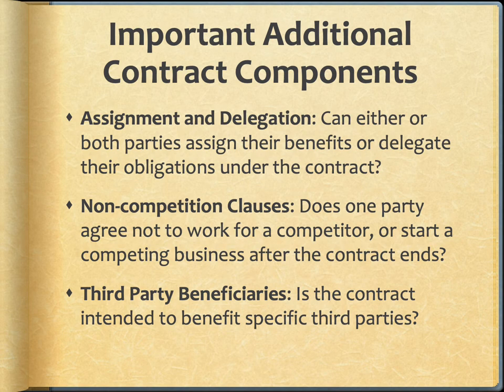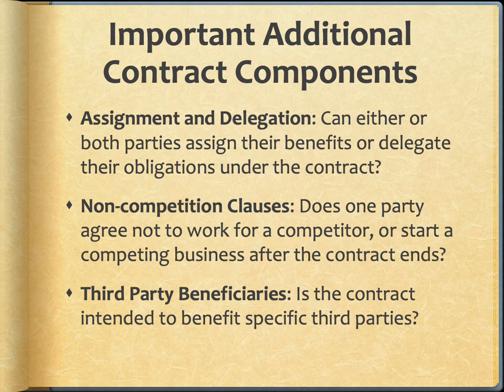Some important additional contract components include assignment and delegation — does the contract say whether either or both parties can assign their benefits or delegate their obligations to other parties? That is, can you turn the contract over to someone else or subcontract? Non-competition clauses: does one party agree not to work for a competitor or not to start a competing business after their contract ends? This is very important in employment contracts. And third-party beneficiaries: is the point of the contract to benefit the people in the contract, or is a third party supposed to be the beneficiary, as is often the case in agreements between parents for the benefit of a child?